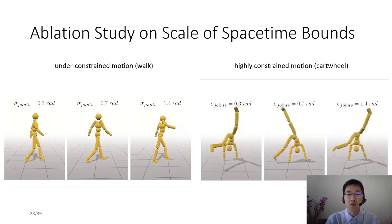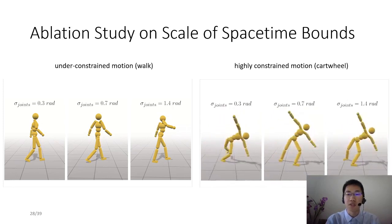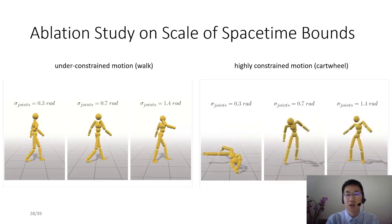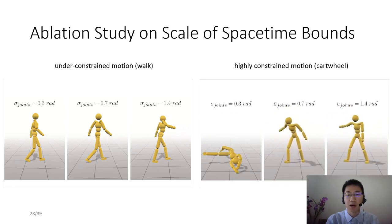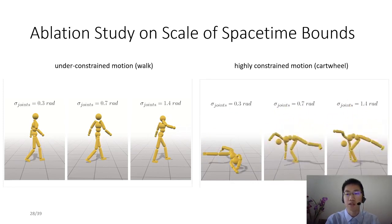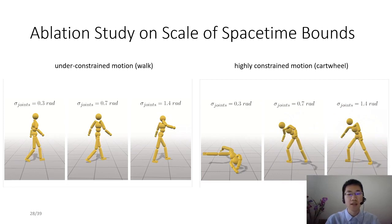For highly constrained motions with narrow initial feasible regions, such as a cartwheel, too tight spacetime bounds result in training failures, and too loose bounds do not influence the learned skills notably. These results reveal the interactions between the spacetime bounds and the inherent feasible regions of dynamic skills.